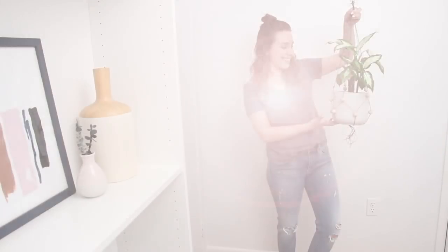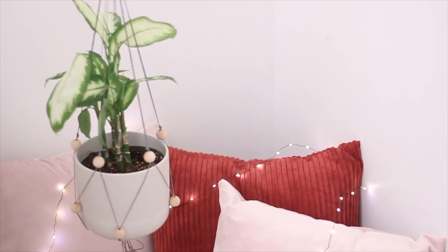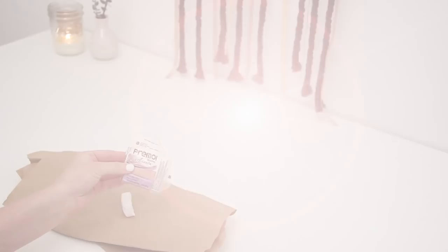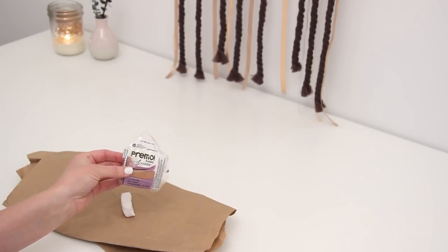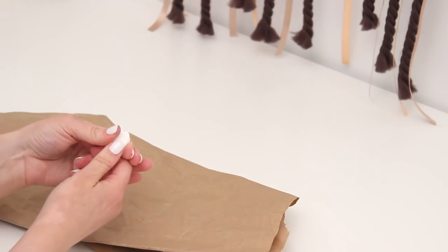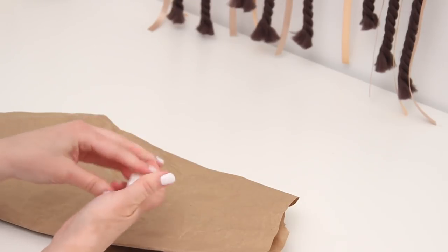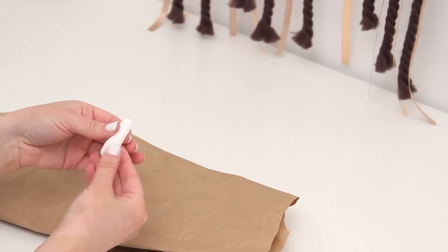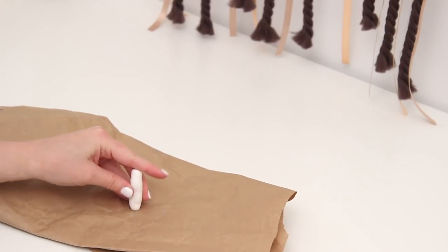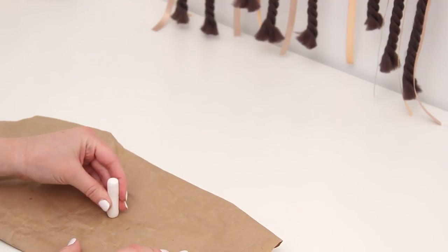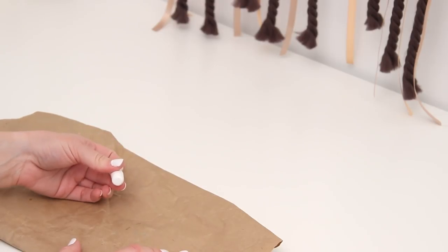This next one is kind of my take on some ceramic planters I saw online. I'm taking some sculpting clay from the craft store that comes in little bars. Separate them out in half and work with it until it's soft and easy to form. I'm rolling it into a little tube shape, probably about three or four inches long.